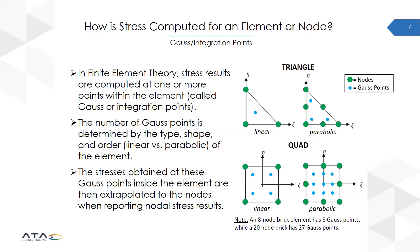When you're looking at elemental stress results, what you're getting is a stress that is computed from the Gauss point stresses. Whereas when you're looking at nodal stress results, you're getting an extrapolated stress result, because the Gauss point stresses are extrapolated to the nodes — and that's how you're able to obtain nodal stress results.